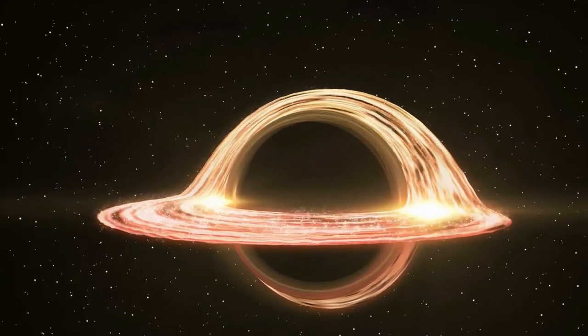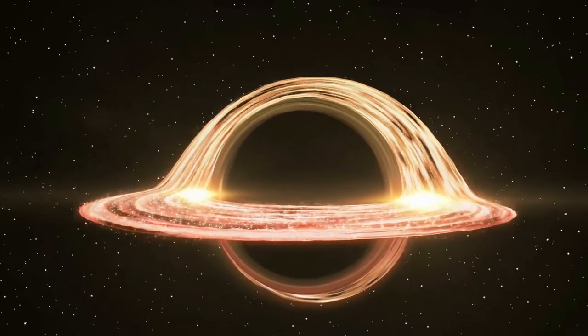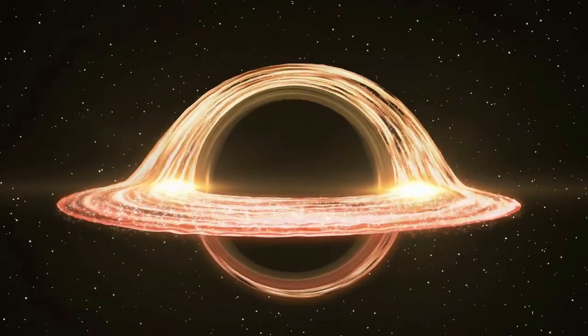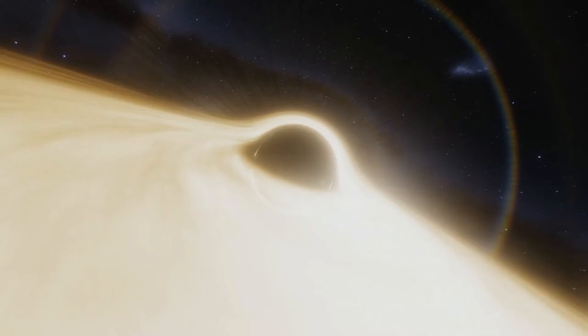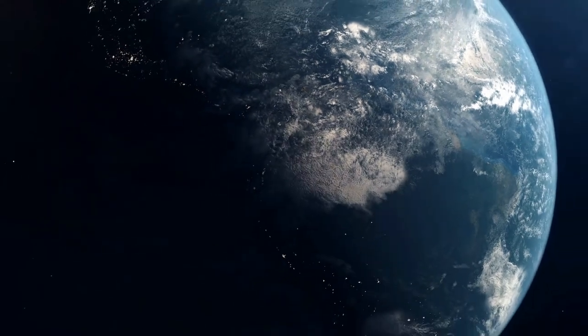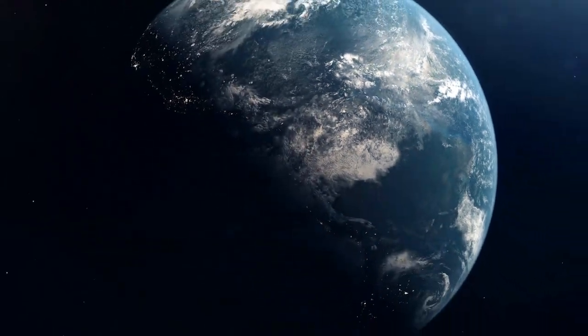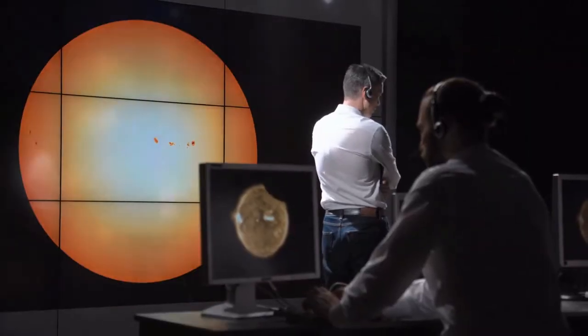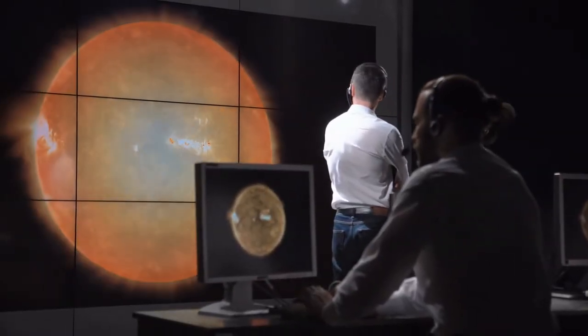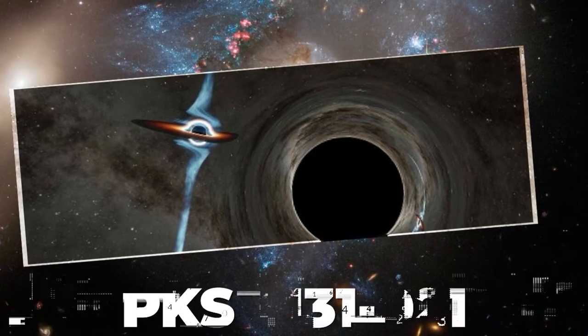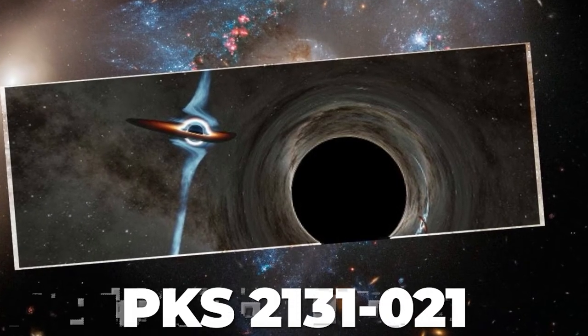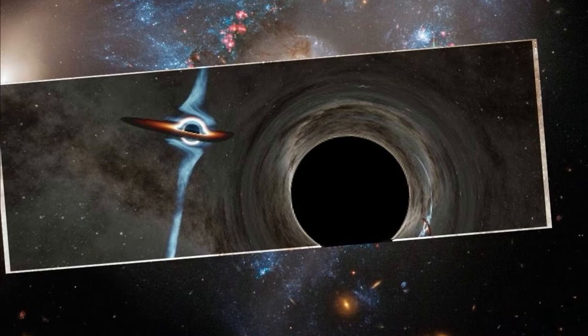Black holes don't emit light, but their gravity can gather disks of hot gas around them and eject some of that material into space. These jets can stretch across for millions of light years. A jet pointed toward Earth appears far brighter than a jet pointed away from Earth. Astronomers call supermassive black holes with jets oriented toward Earth blazars, and a blazar named PKS-2131-021 is at the heart of this recent paper.